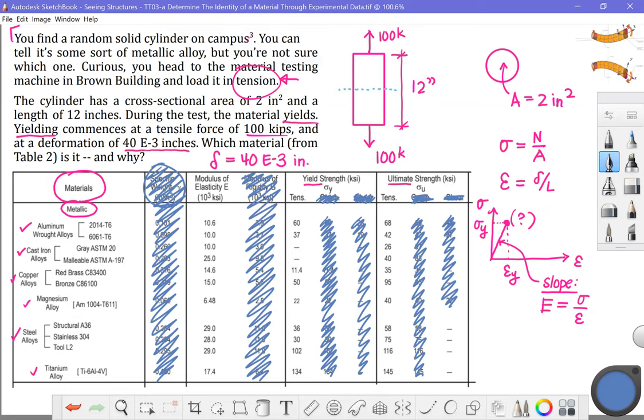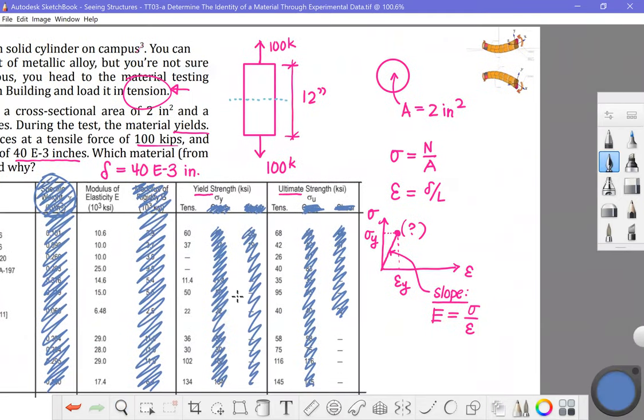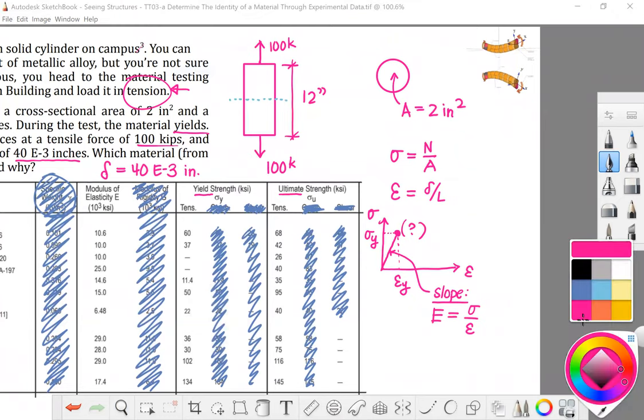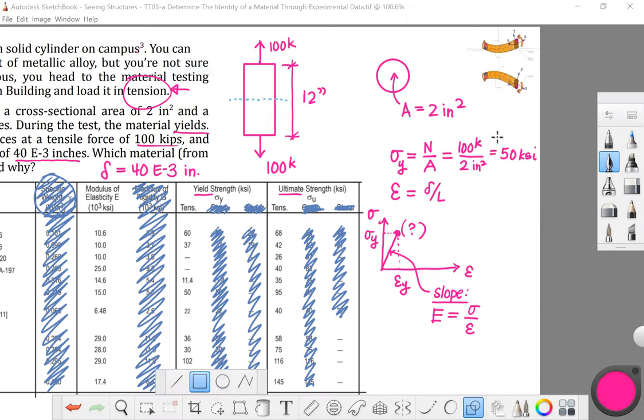Let's go ahead and run through some of these equations. I'm going to slide this over here temporarily. Let's plug into this first equation and see what the stress in the cylinder is. Our normal force we get from the free body, that's 100 kips of tension. Our cross-sectional area, that's the area of circular cross-section, that is 2 inches squared. That divides out to 50 ksi. The material says that that is when yielding occurs. So in other words, we have just determined that the yield stress of this particular material is 50 ksi experimentally.